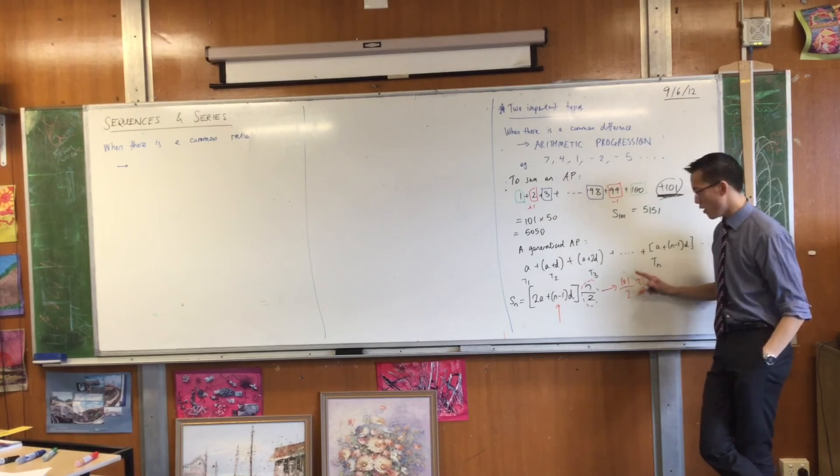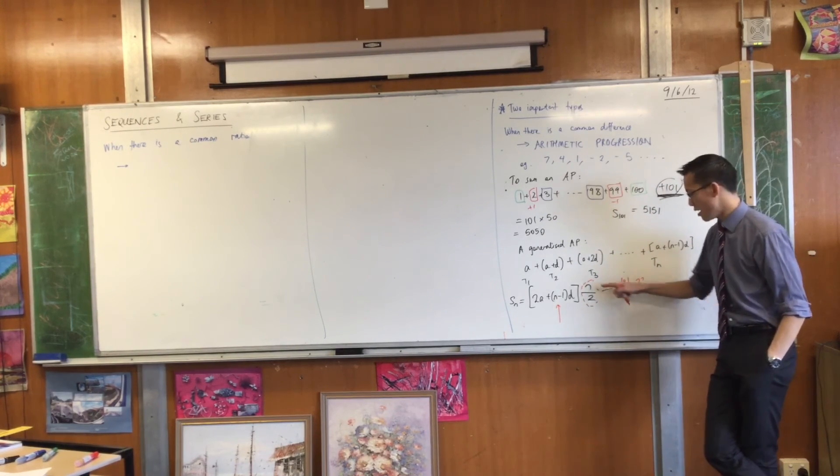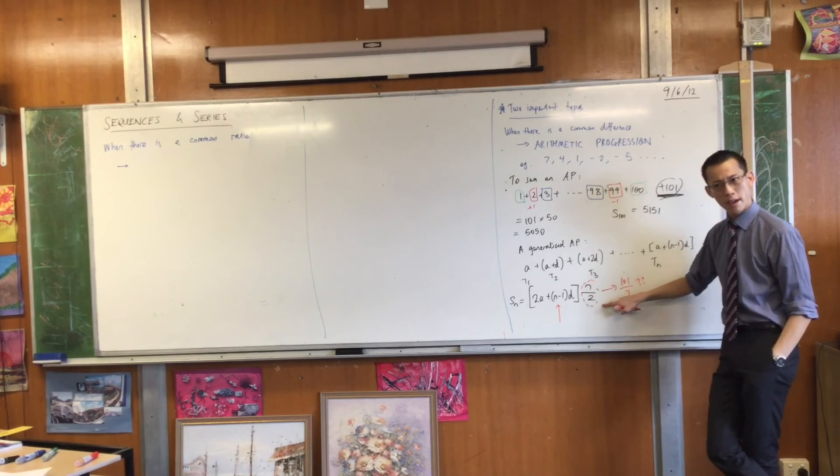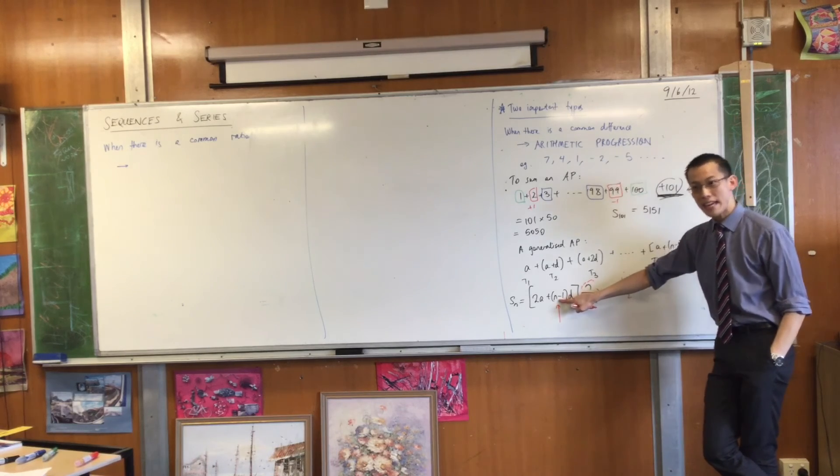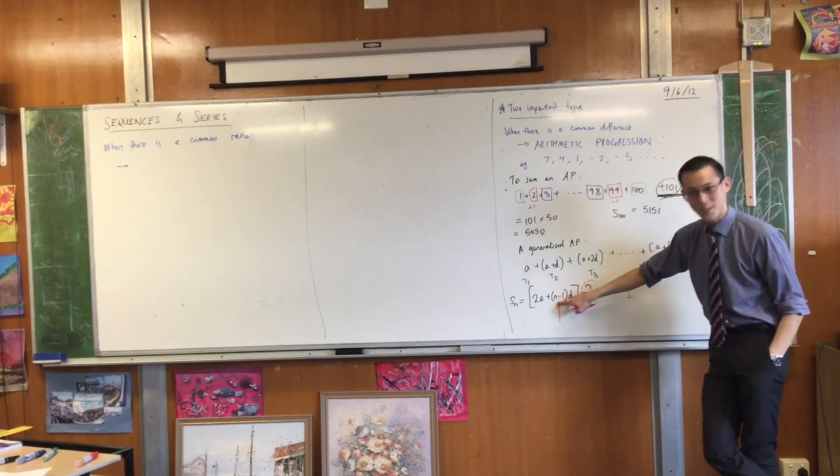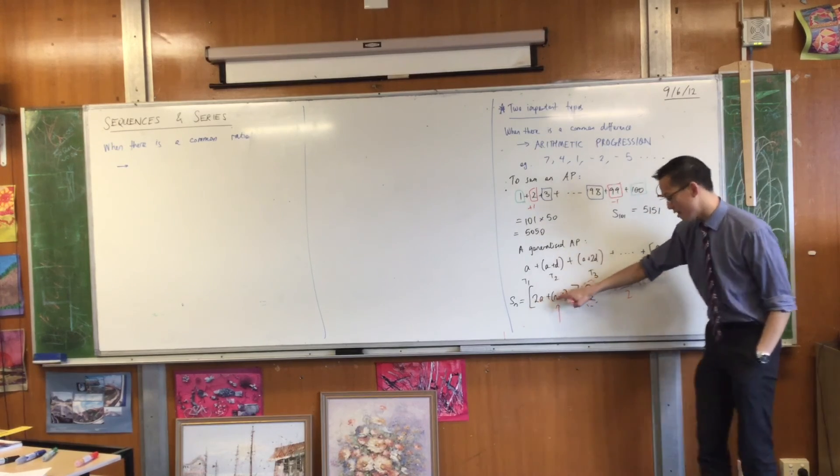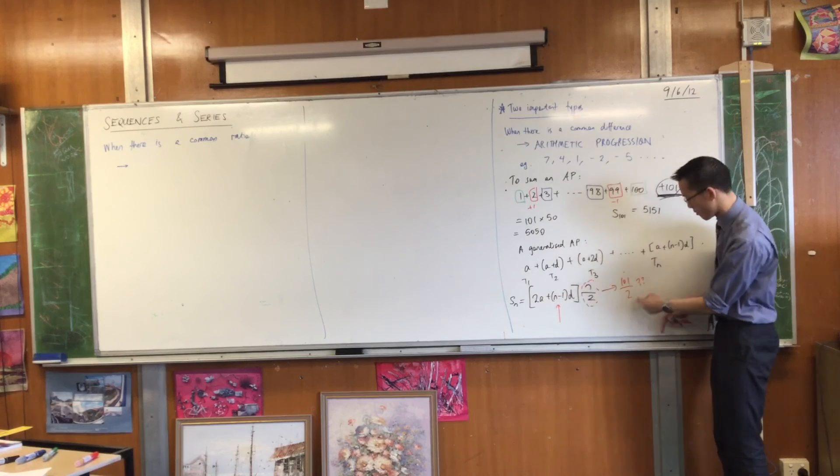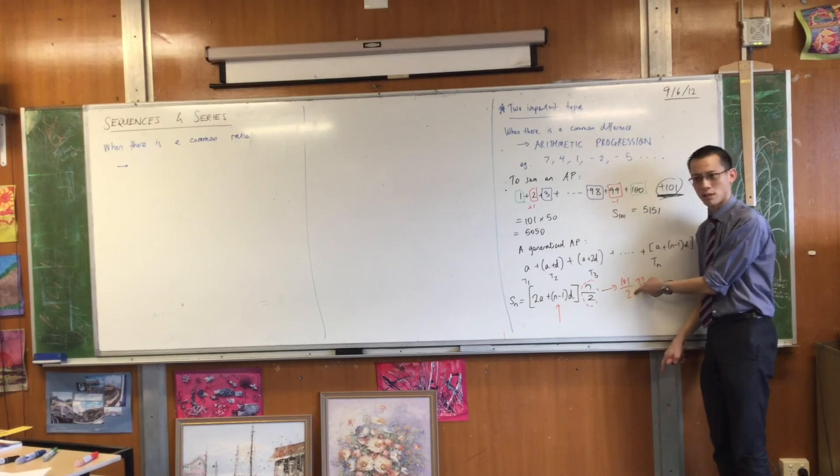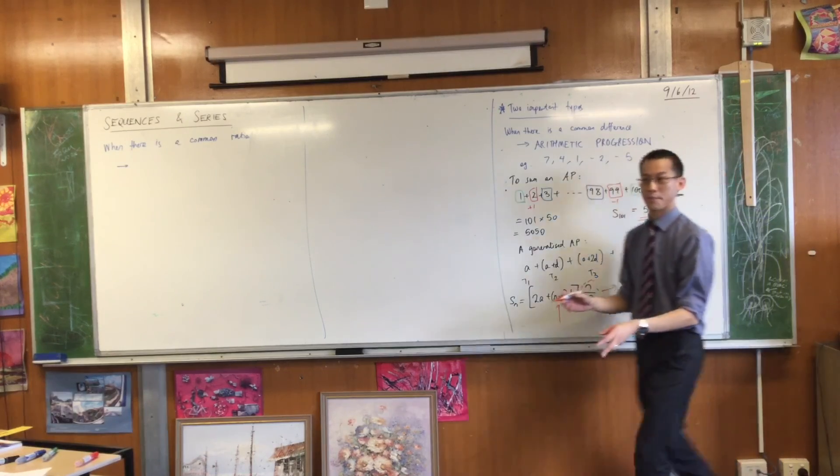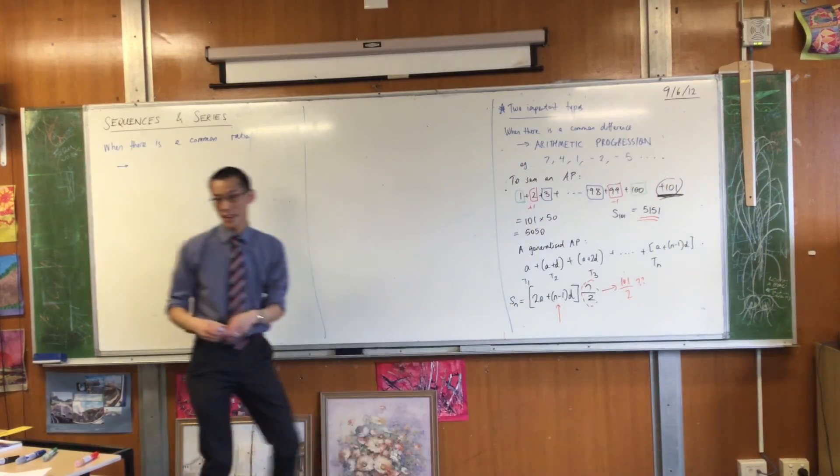But look at this guy. If n is odd, what do you know about n minus 1? Even. It has to be even, right? This is going to be even, this is going to be even. So if you've got even numbers in there, they're going to overcome the fact that you've got this division by 2. Does that make sense? It's why you end up with this whole number, no matter what happens, no matter how many times you actually stick in there.